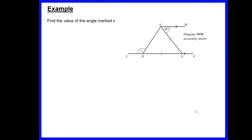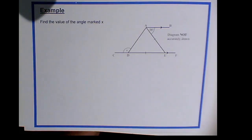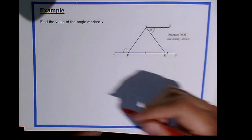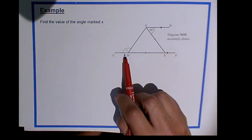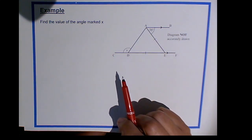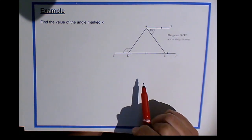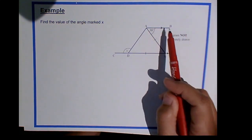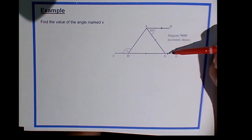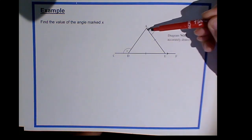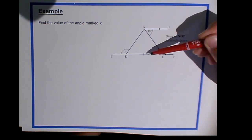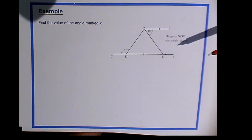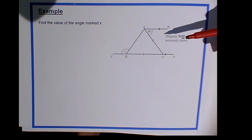Now we're going to have a go at finding an angle. We're asked to find the angle marked X on a diagram. To find angle X we're probably going to need to find some other angles first, so we need to take a really good look at the diagram and see what we've been given. We've been given two parallel lines — marked with small arrows to show they're parallel — and a triangle with two small marks on two of its sides, indicating it's an isosceles triangle. So we need to know the facts about isosceles triangles.